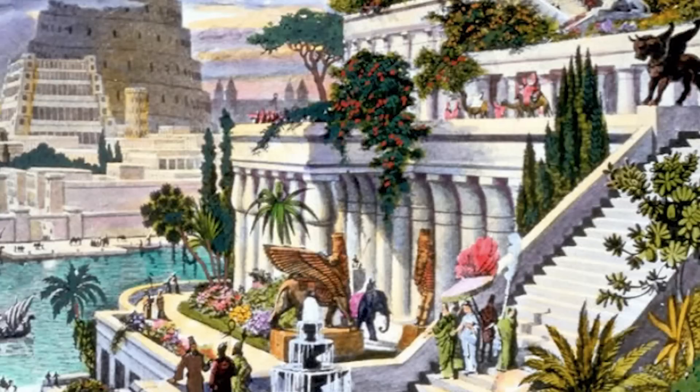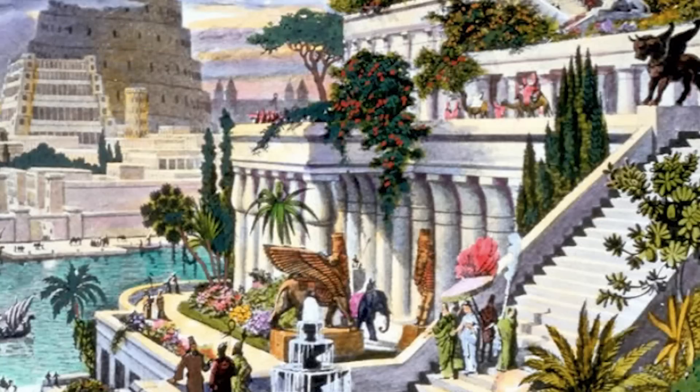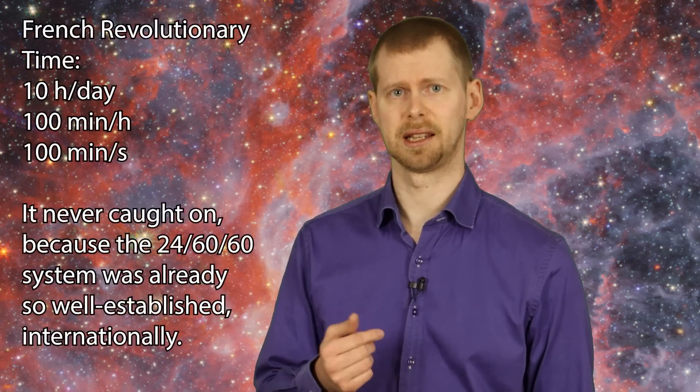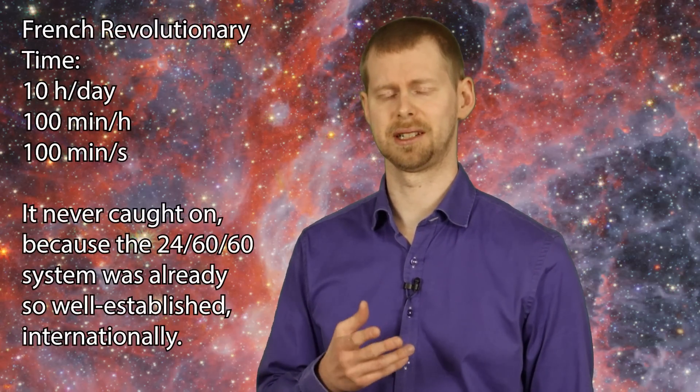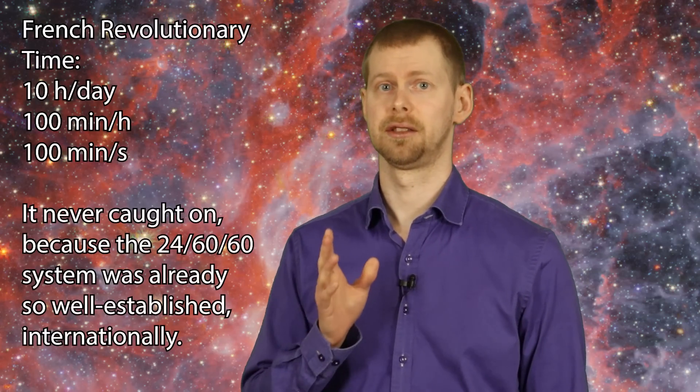60 is another number that has lots of divisors, so it was actually used as the base of the Babylonian numeral system. This is why we divide hours into 60 minutes and minutes into 60 seconds. But we could just as easily have divided the day into 10 hours, the hour into 10 minutes, and so on. In fact, there was a system like that introduced in France at one point, but it never caught on. The point is that the numbers 24 and 60 are completely arbitrary choices.